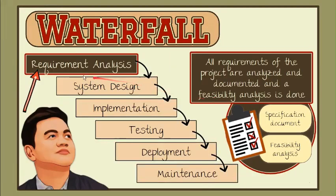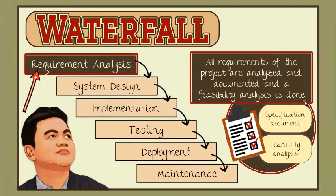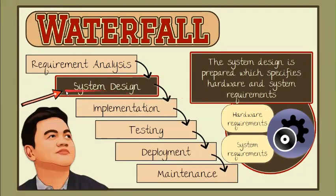First, requirements analysis. In this phase, all requirements of the project are analyzed and documented in a specification document. A feasibility analysis is done to check if these requirements are valid. Second, system design. In this phase, the system design is prepared, which specifies hardware and system requirements.